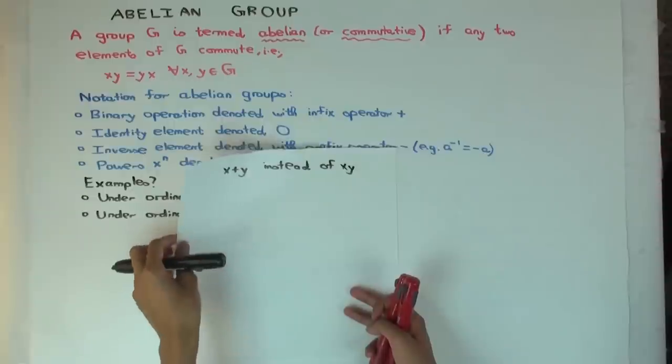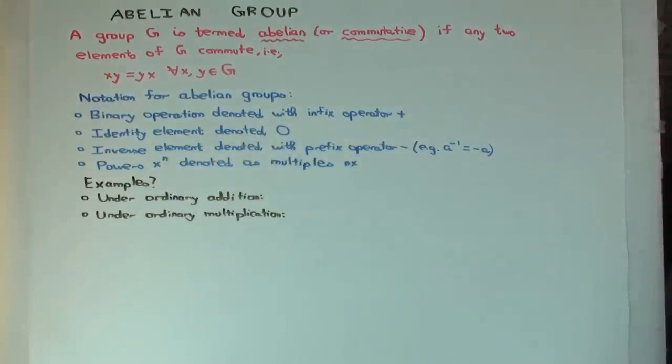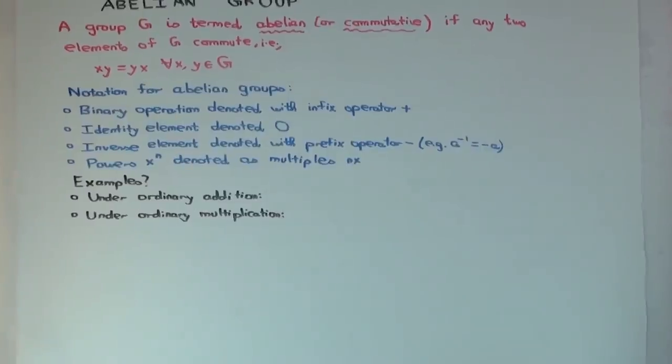The identity element is denoted 0. Because if you think of addition, the usual addition of integers or real numbers, then the identity element for addition is in fact 0. So in keeping with that, we denote the identity element for abelian groups as 0. Instead of what? What's the symbol for identity element when we're dealing with groups in general? Yeah, it's 1. Sometimes you use e if you want to keep it abstract, but we don't use 0 generally.